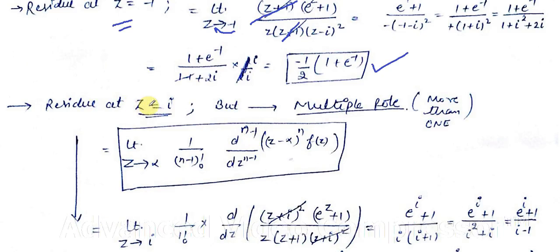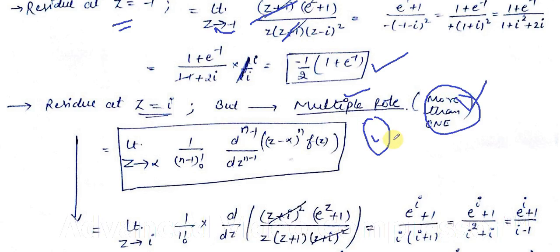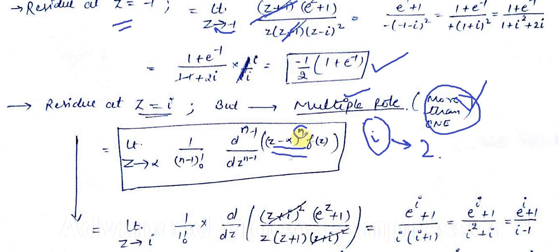For the residue at z = i, since there are two poles at this point (a pole of order 2), we use the multiple-pole formula. The general formula for a pole of order n at z = α is: take the limit as z → α of (1/(n−1)!) · d^(n−1)/dz^(n−1) [(z−α)^n · f(z)]. In our case n = 2, so we differentiate once.